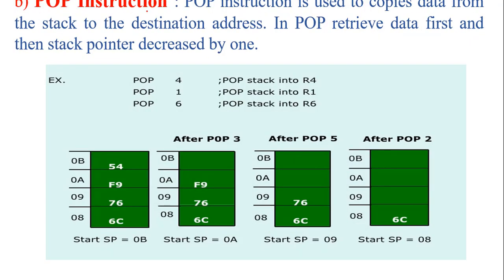Next is the POP instruction. In case of POP instruction, we retrieve data from the stack and store it into the destination address, which can be any memory location or any register. The POP instruction is used to copy or retrieve data from the stack area to the destination address. After retrieving data from the stack area, the stack pointer register is decremented by 1. Let us assume this is the stack area and these are the addresses. The stack pointer register always indicates the top address of the stack.